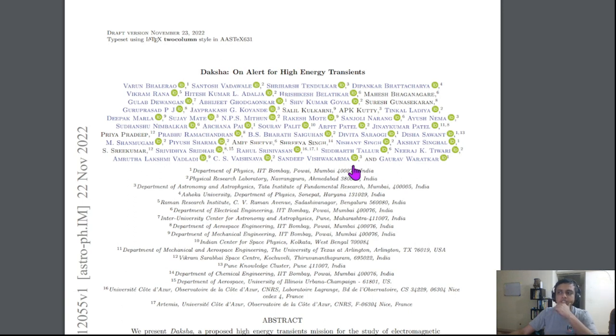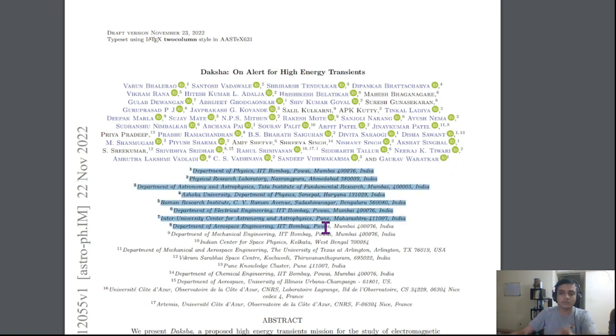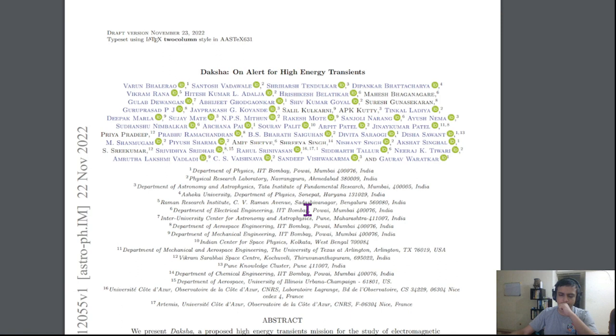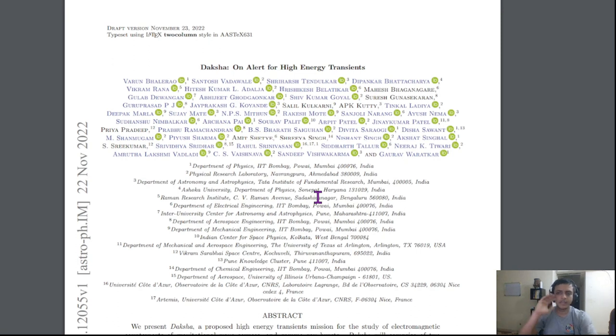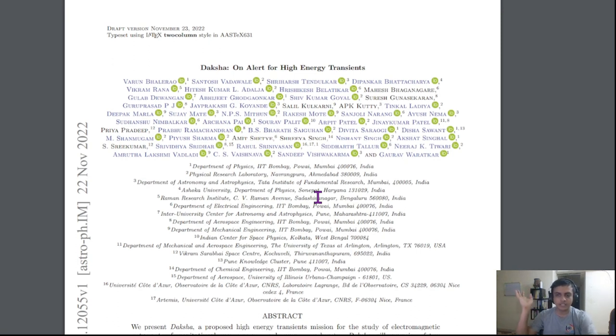One thing to note is this is a big collaboration with about five institutes across India, spearheaded by IIT Bombay. Daksha is an x-ray telescope which would be sent out in the lower orbit potentially in this decade, and it would search for various science cases like GRBs (gamma ray bursts), redshifted GRBs, FRBs, AGNs, and so on.